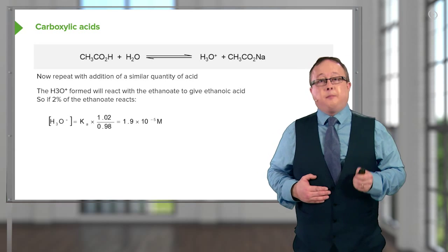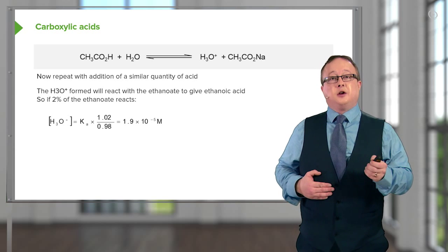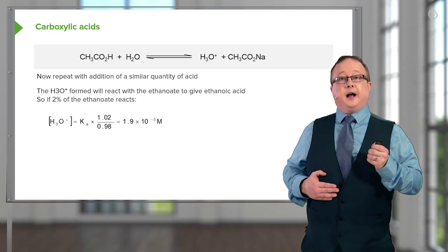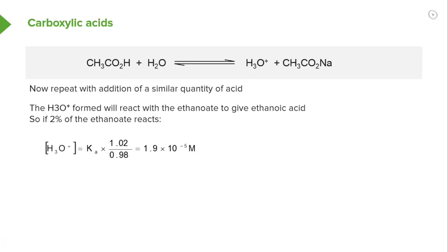However, let's repeat with the same concentration of acid. Note what we did beforehand. We're actually adding some more acid to the scenario, so we're converting more of the sodium ethanoate into the ethanoic acid. We're moving the equilibrium back towards the reactants. This is represented in the equation here: 1.02 over 0.98. This results in a marginally increased concentration of H+ of 1.9 × 10^-5. Now if we do the negative log to the base 10 of that concentration of H+, we see that we end up with a pH value of 4.72.